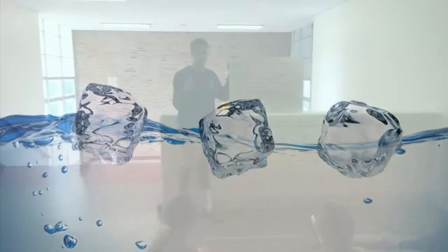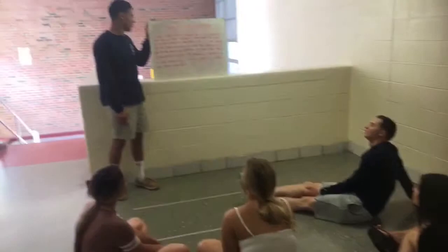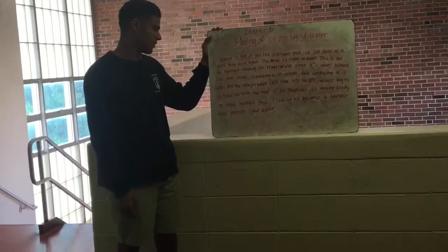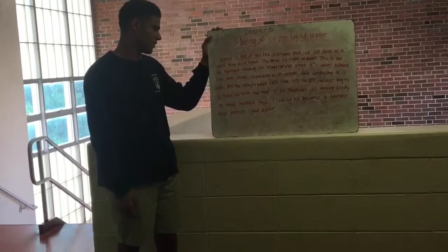Chapter 6: Floating of Ice on Liquid Water. Ice floats on liquid water, and this is due to hydrogen bonding. At temperatures above 4 degrees Celsius, water behaves like other liquids, expanding as it warms and contracting as it cools. As the temperature falls from 4 degrees Celsius to 0 degrees Celsius, water begins to freeze because more and more of its molecules are moving too slowly to break hydrogen bonds. The floating ice becomes a barrier that protects the water beneath.